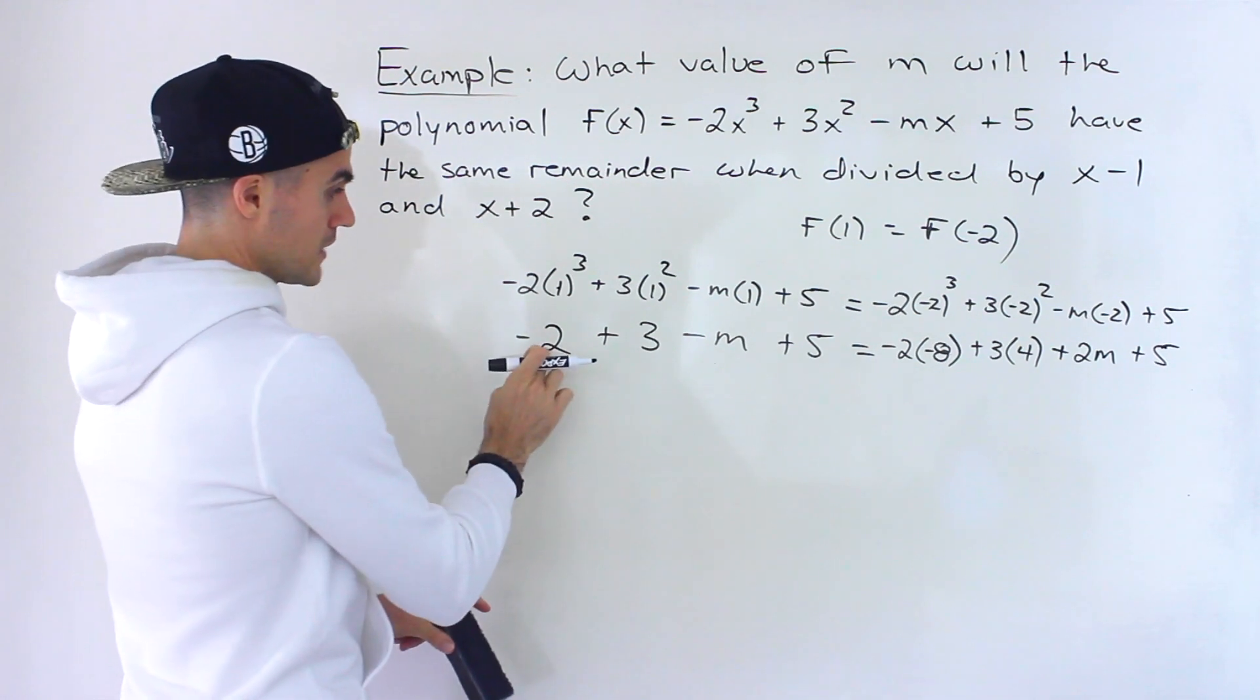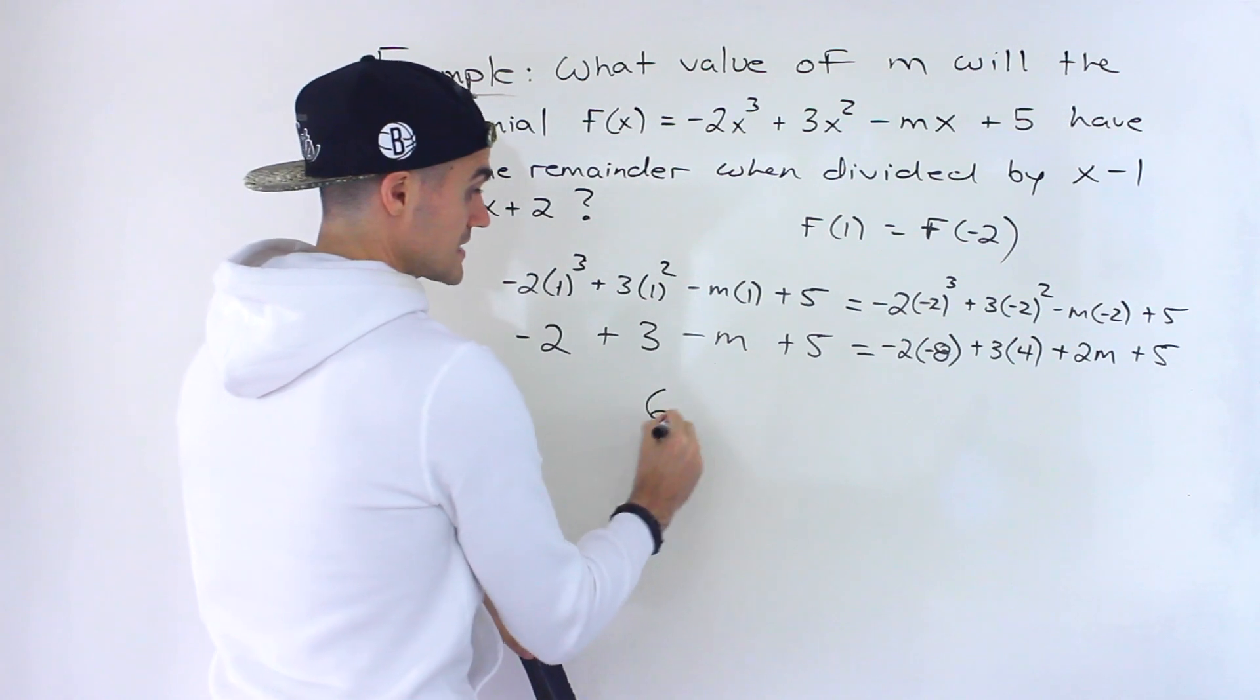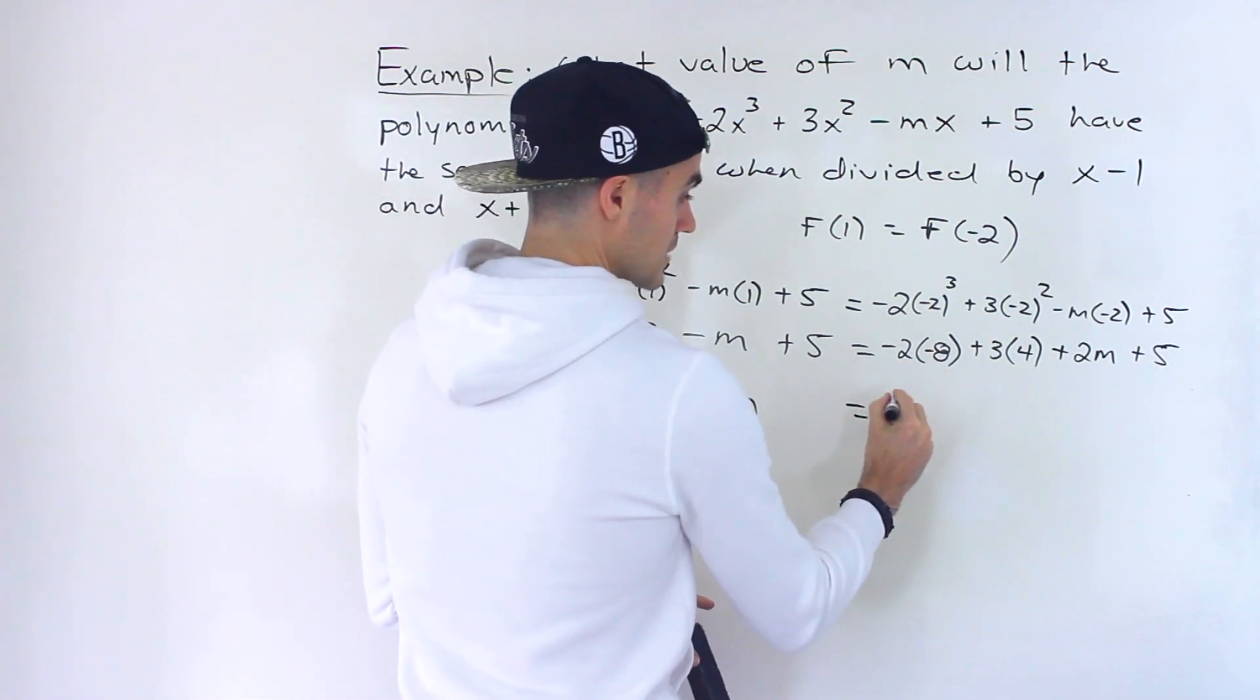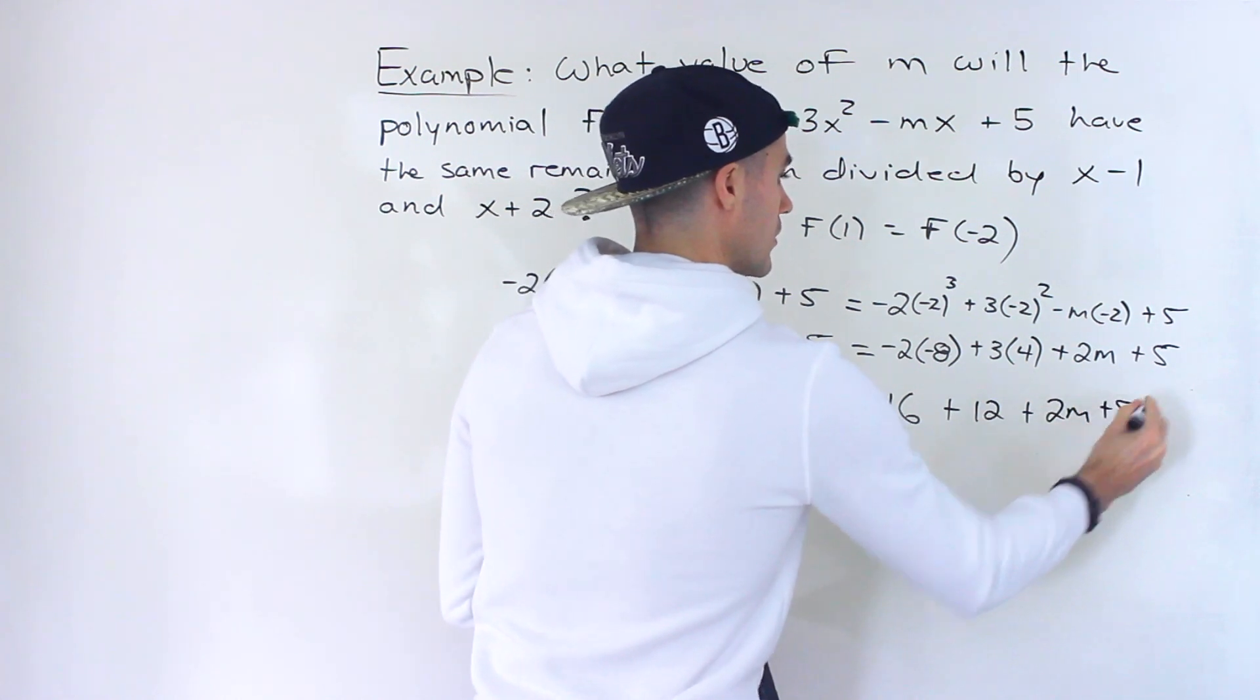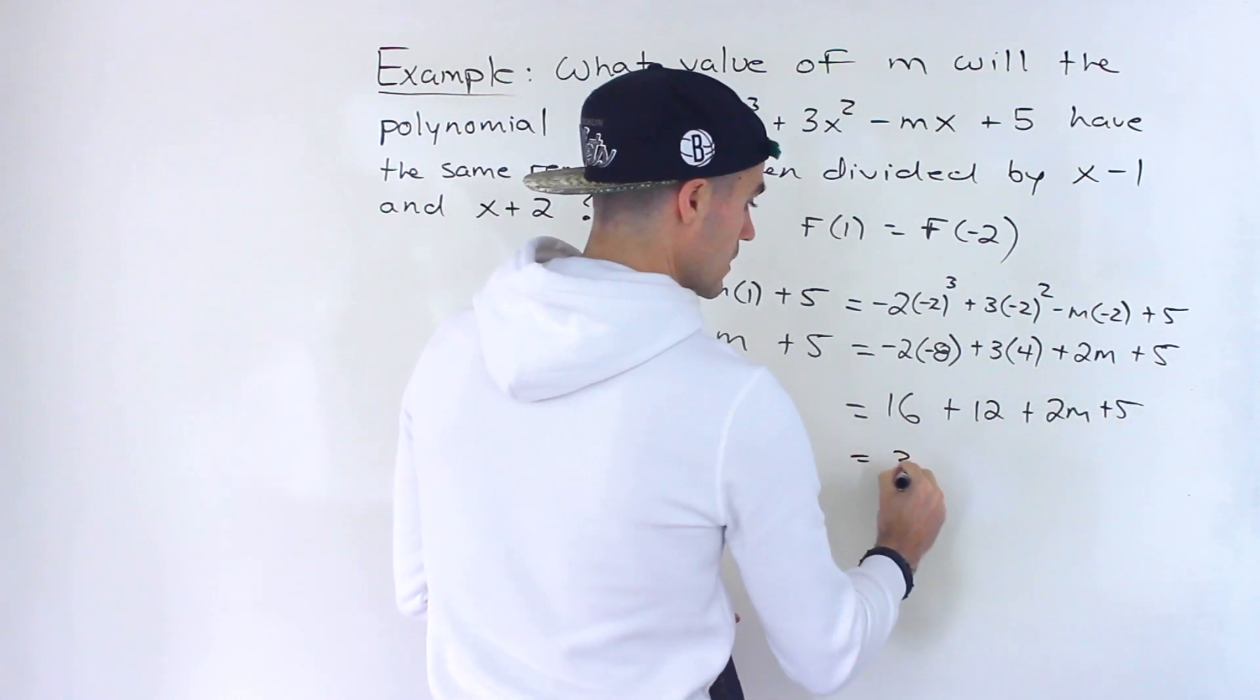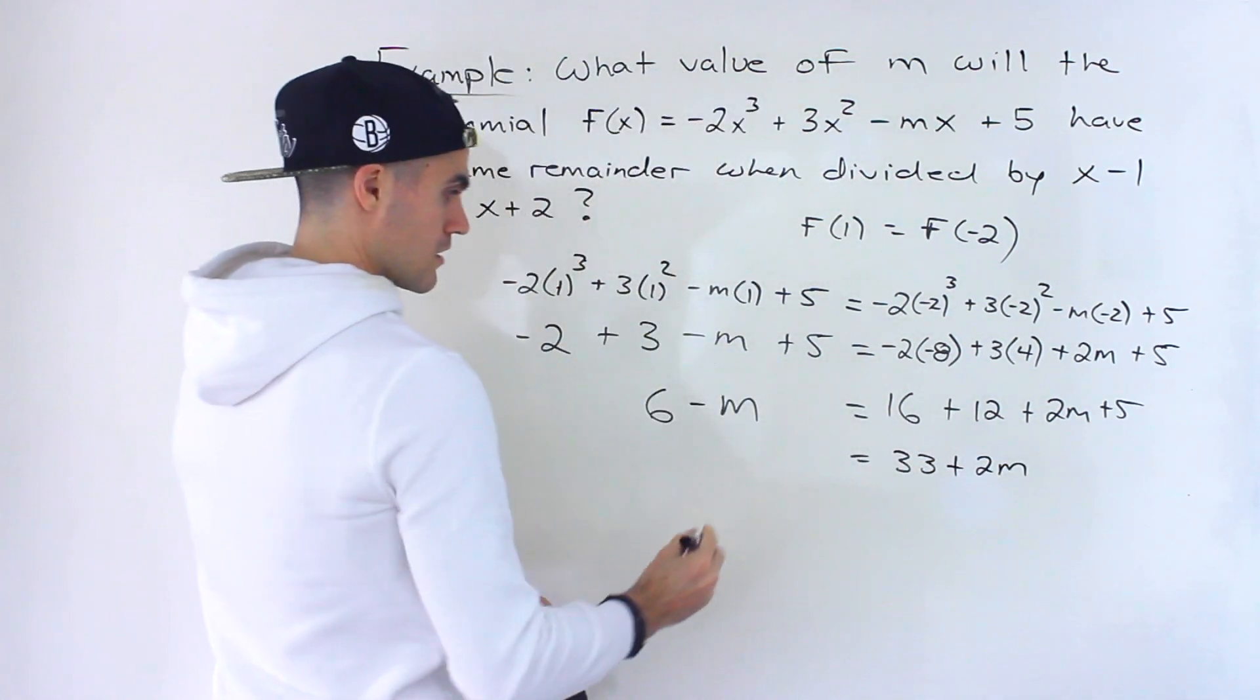Then just simplify all the way. So -2 + 3 is 1, plus 5 gives us 6. So we'd have 6 - m. Here, -2 times -8 is positive 16. We'd have 12 + 2m + 5. That's 28, 33.